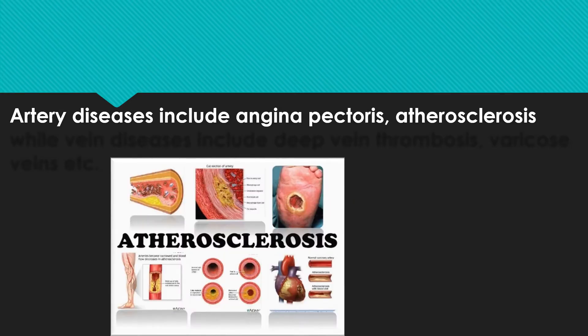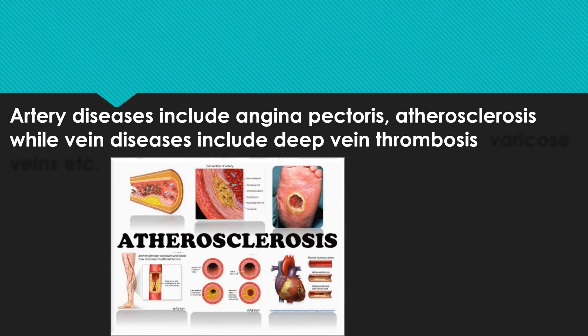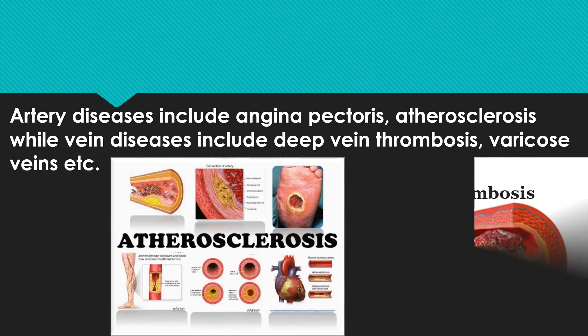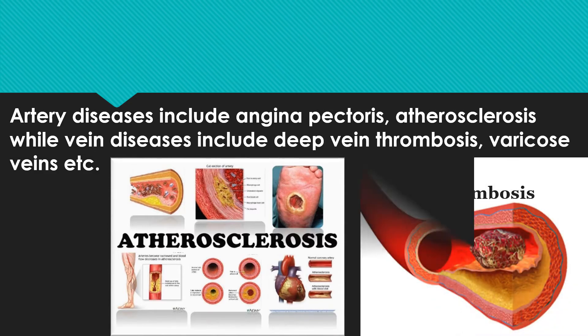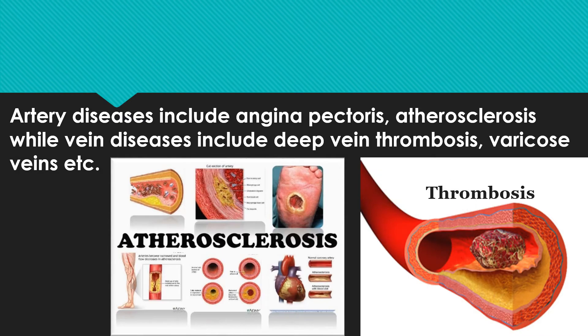Arteries are not susceptible to collapsing if blood flow stops while veins are, due to the presence of a thick muscular layer in arteries. Artery diseases include angina pectoris and atherosclerosis, while vein diseases include deep vein thrombosis and varicose veins.